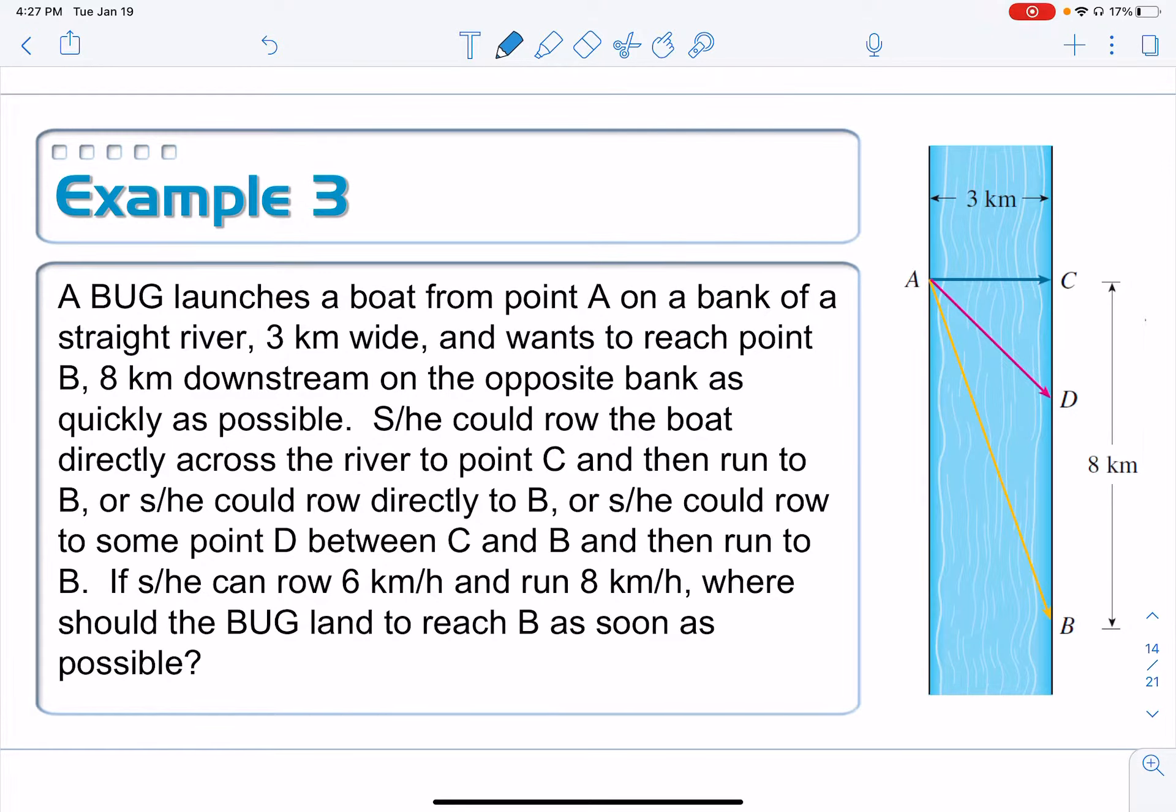On example three, we have yet another river-based question. We've got a bug. Remember, a bug is a being of unspecified gender. It launches a boat from point A on a bank of a straight river. All the rivers in calculus are totally straight. The river is three kilometers wide, as we can see right here in this diagram, and wants to reach a point that is eight kilometers downstream on the opposite bank, right down here, as quickly as possible.